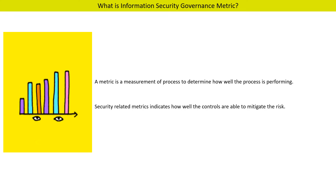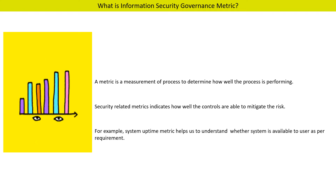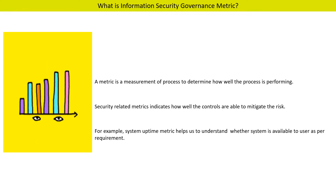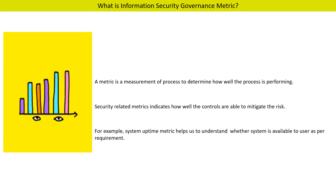Security-related metrics indicate how well the controls are able to mitigate information security risk. For example, the System Uptime metric helps us understand whether a system is available to the user as per requirement. Metrics should be able to provide relevant information to the recipient so that informed decisions can be made.